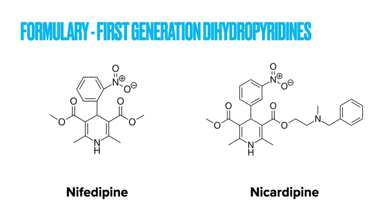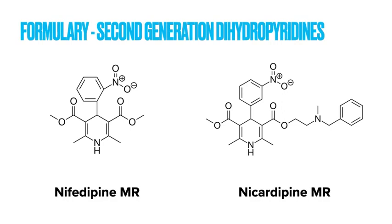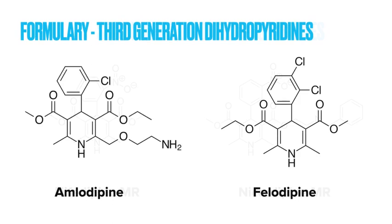There is very little reason to be using first-generation drugs in modern practice. The second generation is essentially the same drugs but in a modified release form, allowing less frequent dosing. We do still sometimes see modified release nifedipine used in the management of angina. The third generation is where we start to see the drugs that are probably more familiar, including everyone's favourite amlodipine but also felodipine. These were a big step up as their pharmacology allowed for a much longer half-life, meaning once-daily dosing without any modified release preparation.